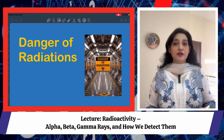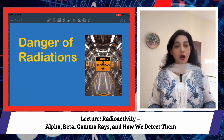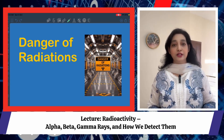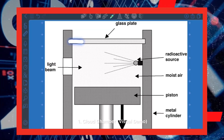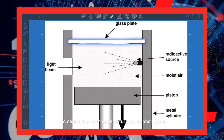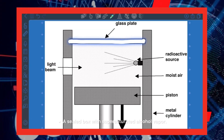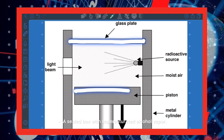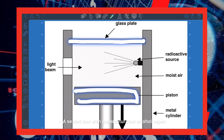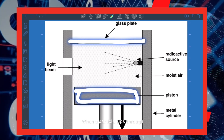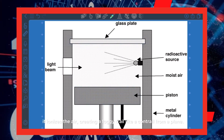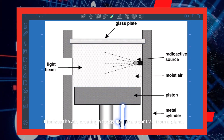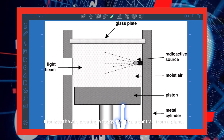Today we discussed alpha, beta, and gamma radiations — their properties, detection, uses, and dangers. In the next lecture we will move to half-life and nuclear reactions. Now, a cloud chamber visual demo: a sealed box with super-saturated alcohol vapor — when a particle zips through it, it ionizes the air, creating a foggy trail.